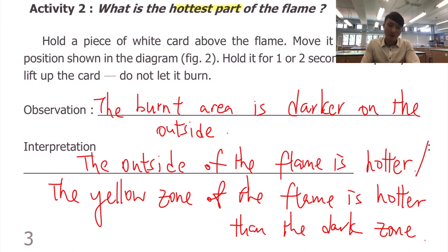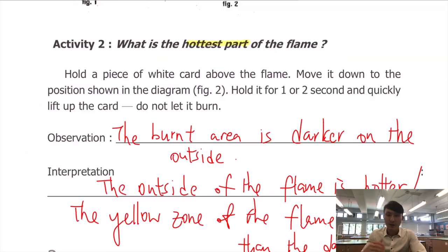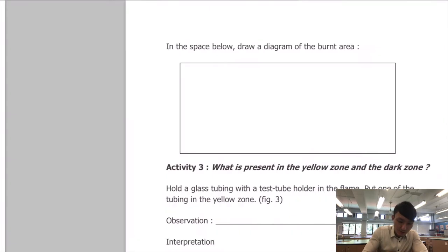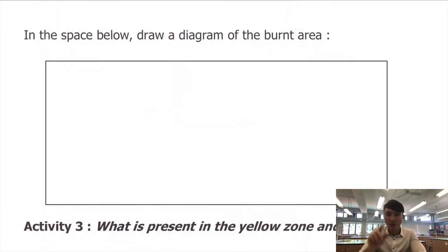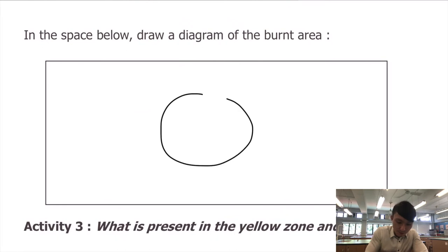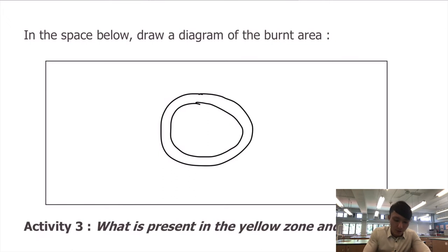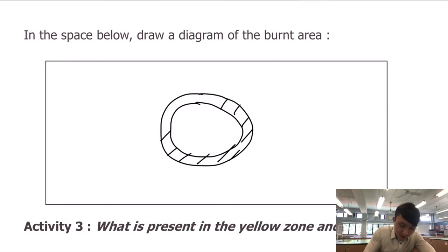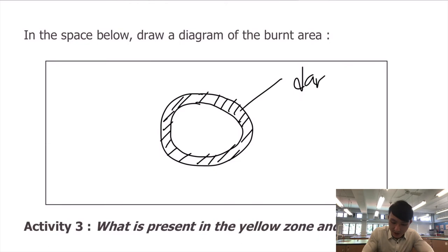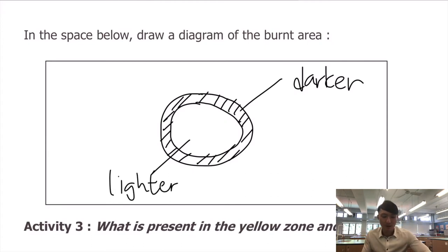So there are two different ways to state the interpretation. On the next page, we are going to draw the burnt area of the cardboard. You can simply draw two circles and use a straight line to represent the darker area. Do not shade the diagram — in scientific drawing, we never shade the diagram. You also need to label: this part is the darker area, whereas the inside should be lighter or paler.